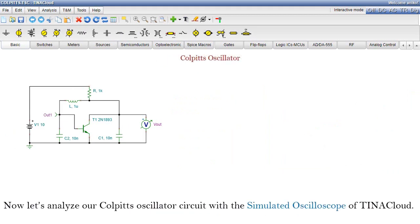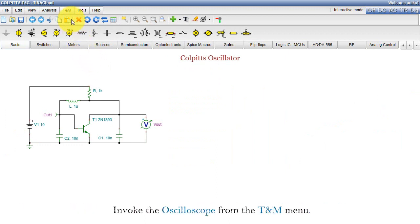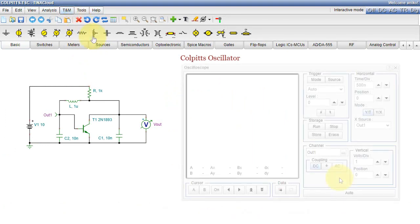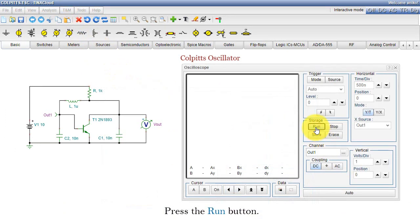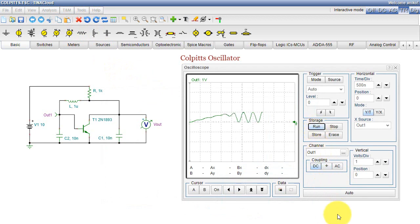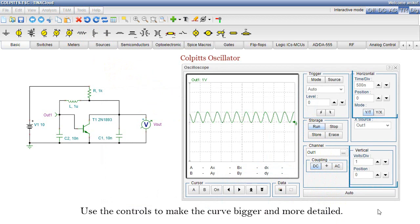Now let's analyze our colpits oscillator circuit with the simulated oscilloscope of TINA Cloud. Invoke the oscilloscope from the TNM menu. Press the Run button. The OUT1 signal appears. Use the controls to make the curve bigger and more detailed.